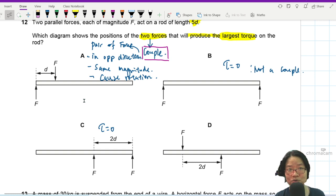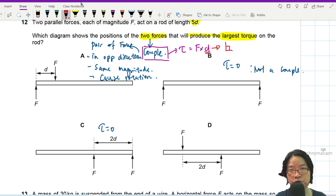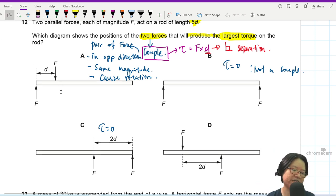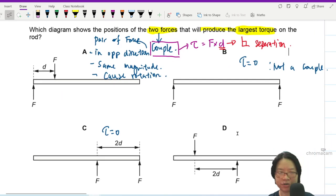So which one can cause more rotation? For a couple, right, the torque is F times d, but this value of d is the perpendicular separation. Okay, this is a shortcut. Or you can just find based on the midpoint, but it doesn't matter.